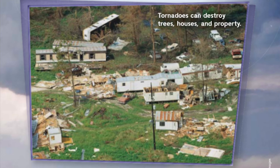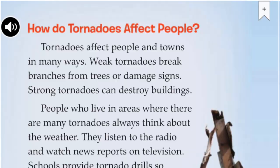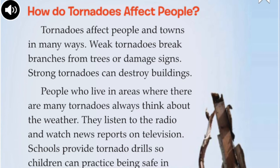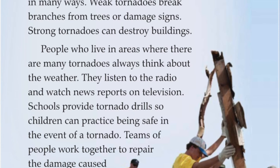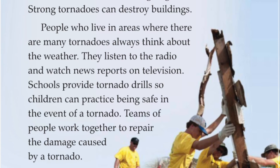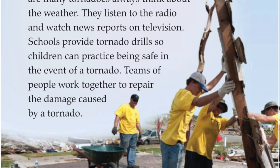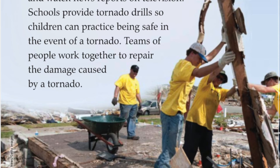Tornadoes can destroy trees, houses, and property. How do tornadoes affect people? Tornadoes affect people and towns in many ways. Weak tornadoes break branches from trees or damage signs. Strong tornadoes can destroy buildings. People who live in areas where there are many tornadoes always think about the weather. They listen to the radio and watch news reports on television. Schools provide tornado drills so children can practice being safe in the event of a tornado. Teams of people work together to repair the damage caused by a tornado.